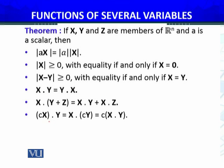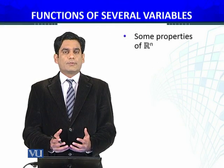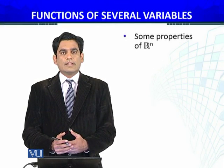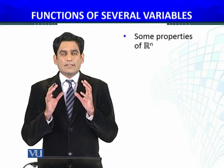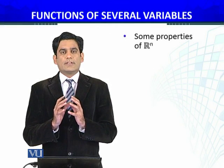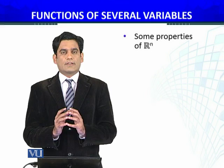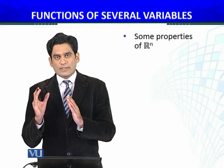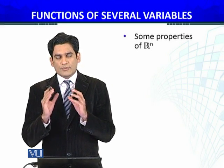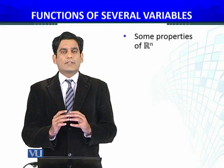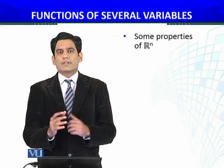For any scalar C, the dot product C times (x dot y) equals x dot (C times y) — you can take the scalar outside the dot product. These properties of the inner product we discussed before, just to remind you. The members of Euclidean spaces Rn, which I call vectors, are n-component vectors: x belongs to Rn has n components. These properties you can verify and prove very easily.